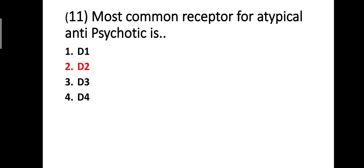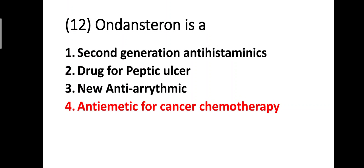Question eleven: the most common receptor for atypical antipsychotics is — option one: D1 receptor, option two: D2 receptor, option three: D3 receptor, option four: D4 receptor. The correct answer is option two — D2 receptor.